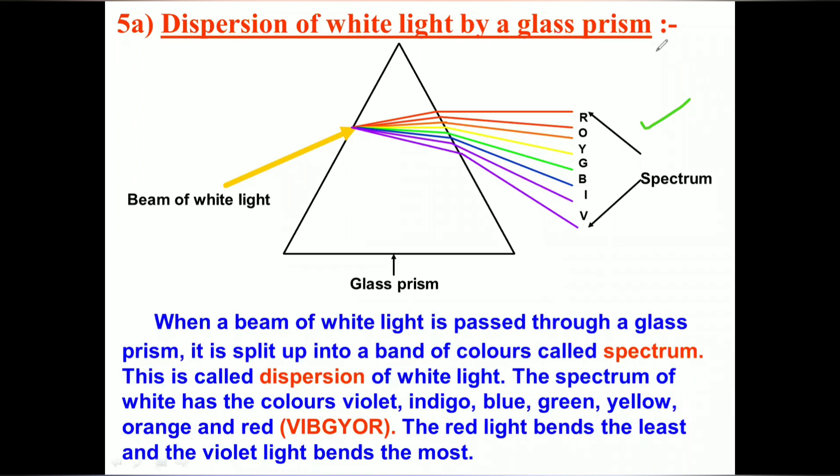Hello students, greetings to all. We discussed the topic dispersion of light in the human eye and colorful world. We have seen the exact meaning of dispersion of light, and when white light passes through a prism, it splits into its constituent colors.